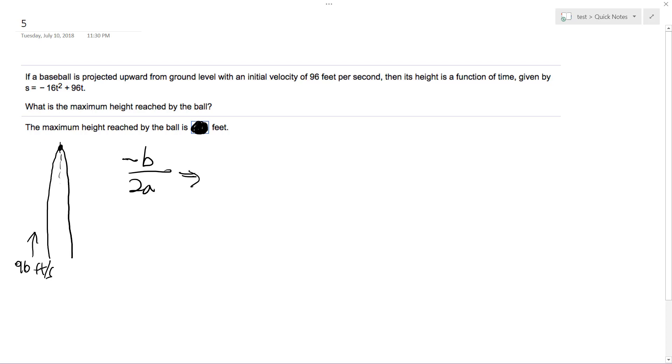In this case -16 is a and b is 96, so we get opposite of b which is -96 over 2 times -16. We get -96 over -32, which gives us the x component of where the pinnacle is. In this case that's 3, so that works out nice.